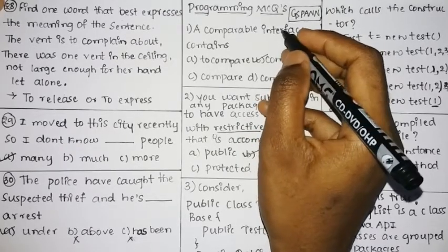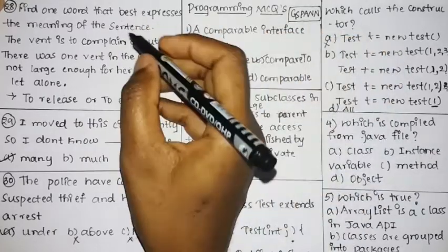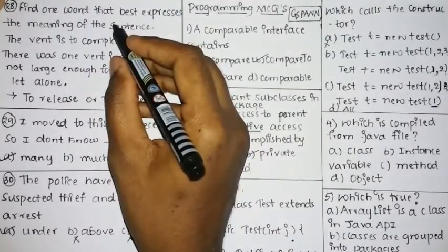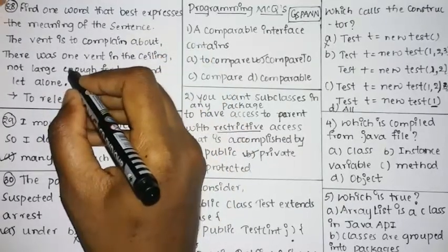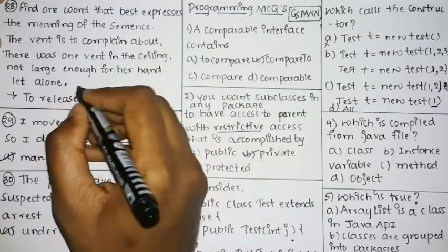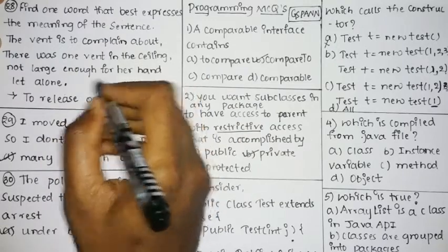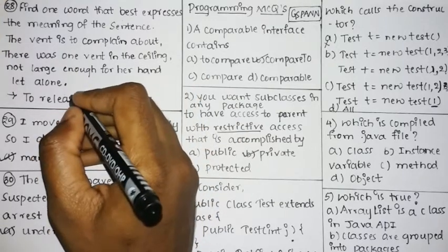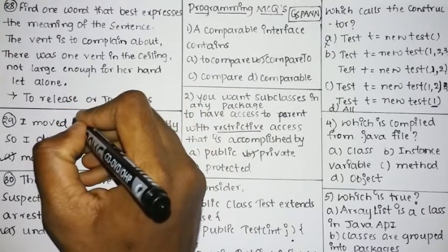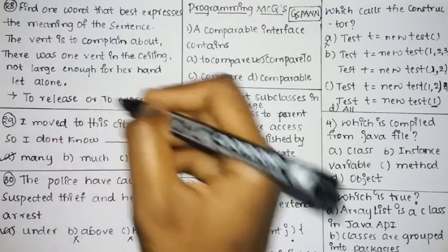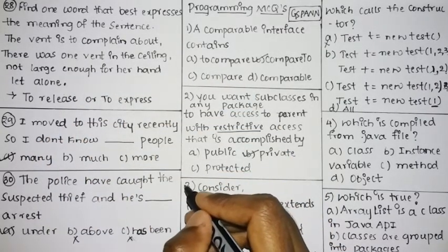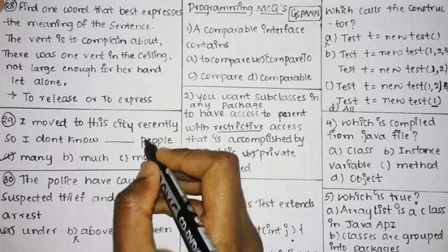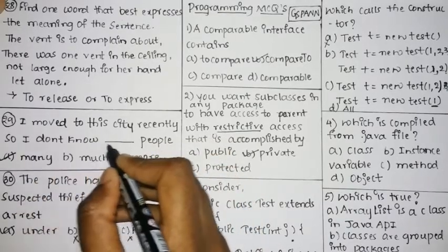The 28th question: find the one word that best expresses the meaning of the sentence. 'To vent' is to complain about something. There was one vent in the ceiling, not large enough for her — 'handlet alone' means to release or express. So 'to vent' means to release or to express.